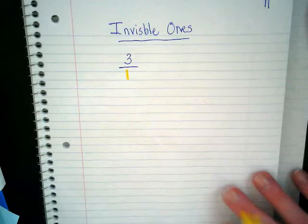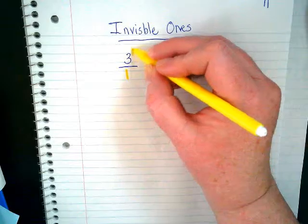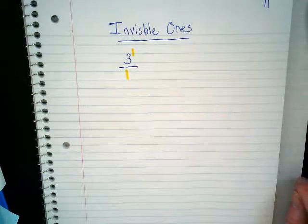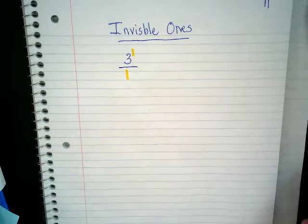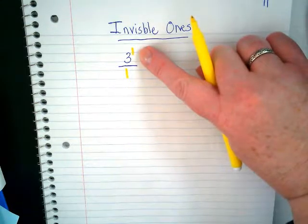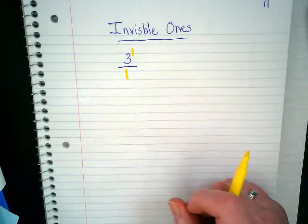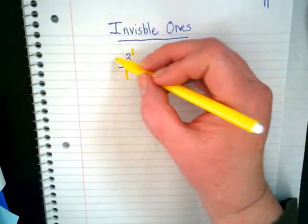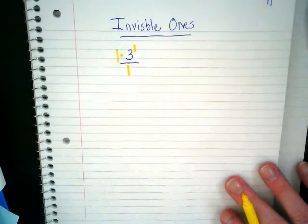It also has an invisible exponent of one. So all whole numbers have an invisible one underneath them, and they have an invisible exponent here of one. There's another one in front of them - an invisible one being multiplied by it.